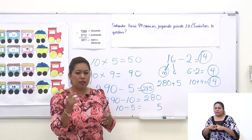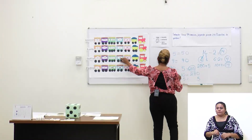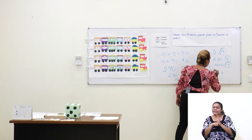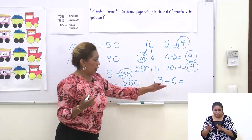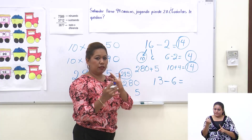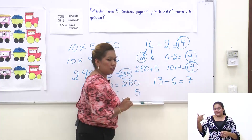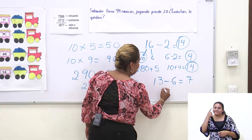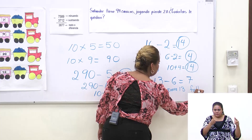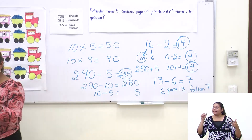¿Lo puede hacer de otra manera? Claro que sí. El sobreconteo: cuando tienes el número 13 y en el dado te sale el número 6, partimos del número 6 y contamos 7, 8, 9, 10, 11, 12, 13. Nos harían falta 7. Se puede resumir así: de 6 para 13 faltan 7. Yo sé que lo vas entendiendo perfectamente.